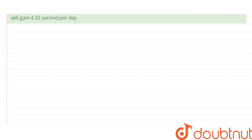Consider a pendulum of length l. The time period of a pendulum is given by T = 2π√(l/g), where g is the acceleration due to gravity.